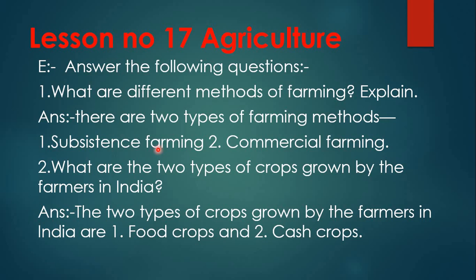Farmers cultivate the land using simple tools and household labor, and this type of farming is done to meet the needs of the farmer's family — it is called subsistence farming. For commercial farming, most of the work is done by machines, and this type of farming is called commercial farming.